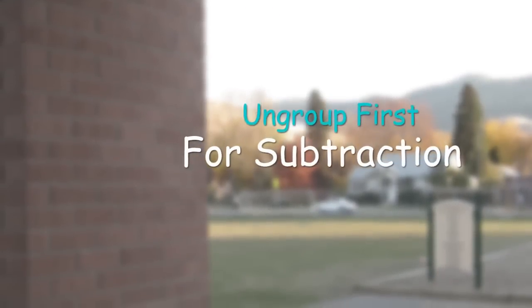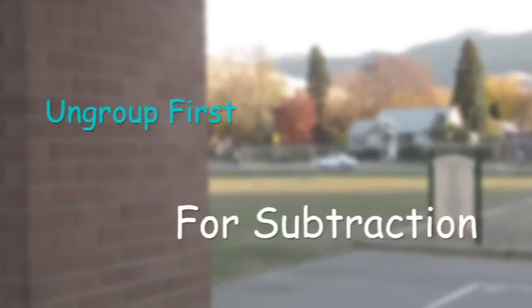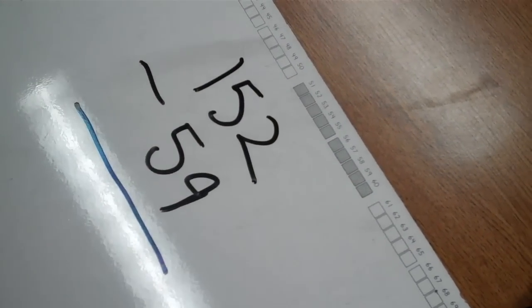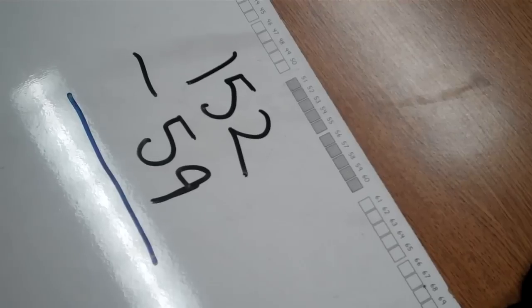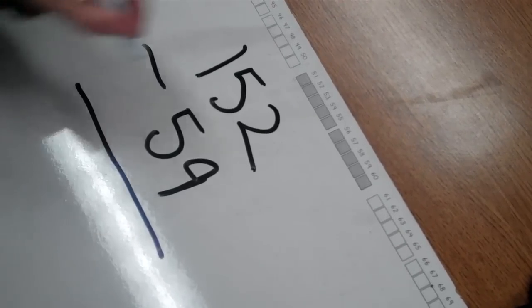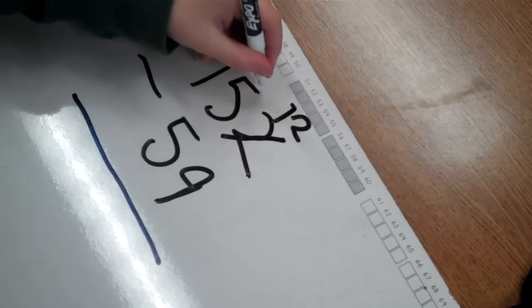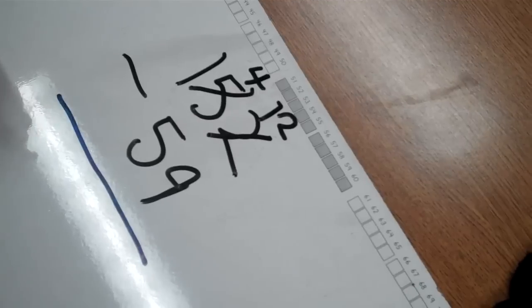Another subtraction strategy that students learn is called the ungroup first strategy. Here the students are checking, starting in the ones place, are they able to do 2 minus 9. Since this isn't possible, the student then moves over to the tens place and ungroups a 10 to make 10 ones.